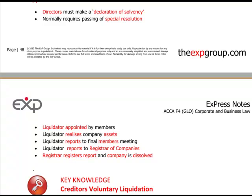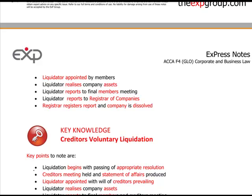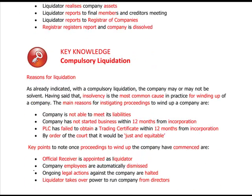The liquidator reports to the Registrar of Companies, the Registrar registers the reports, and the company is dissolved. The alternative is a creditors' voluntary liquidation. Key points: liquidation begins with the passing of an appropriate resolution, a creditors' meeting is held and a statement of affairs is produced, the liquidator is appointed with the will of the creditors prevailing — they must approve it. The liquidator realizes company assets and reports to a final members' and creditors' meeting, then reports to the Registrar of Companies and the company is dissolved.